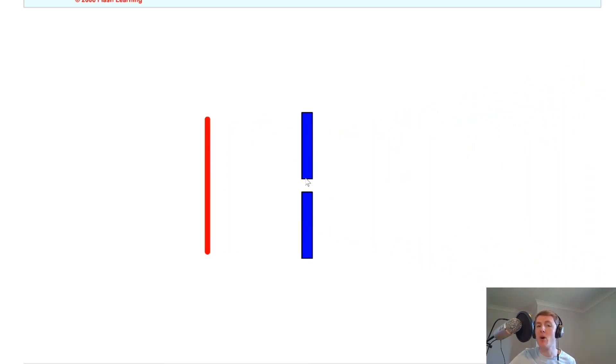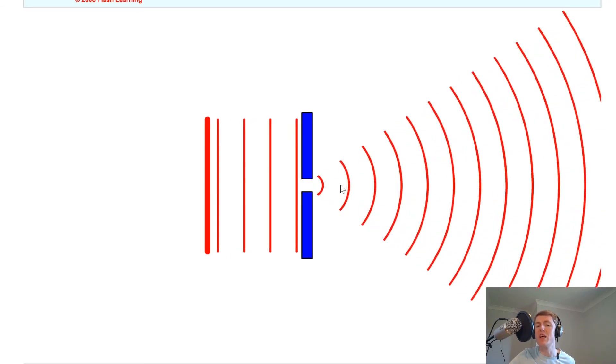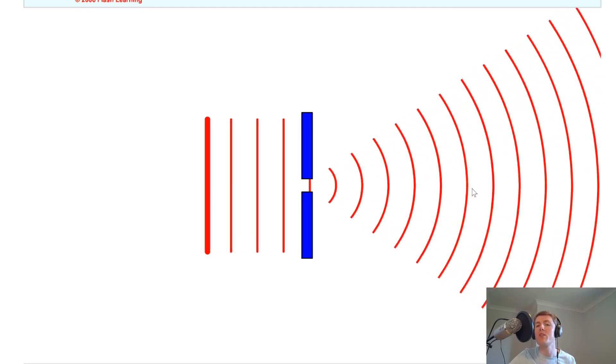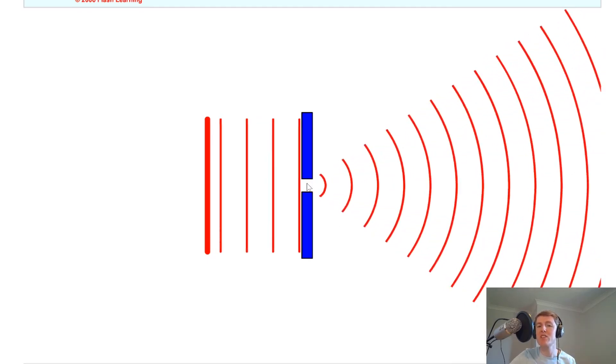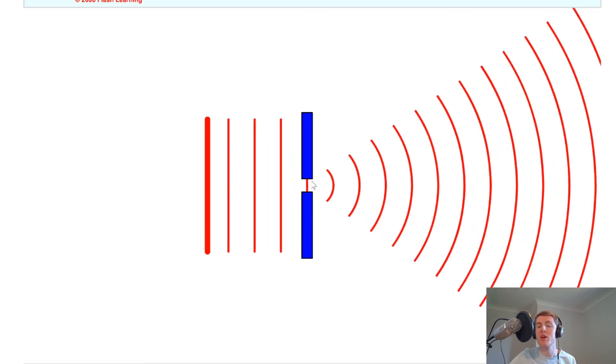If I then make the gap size much smaller, much narrower, then you might already be thinking that by changing the gap size, it's going to change how much the waves are going to diffract. And you would again be right in thinking that. So let's see how a small gap this time is going to affect it. So this time you can hopefully see much more bending than before, much more diffraction.